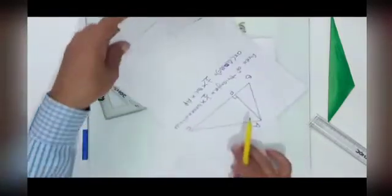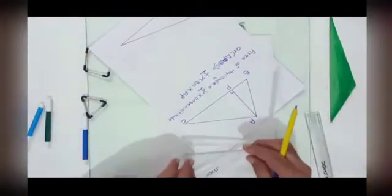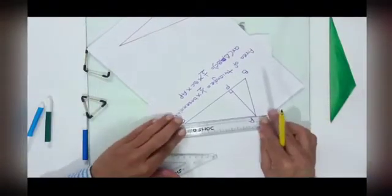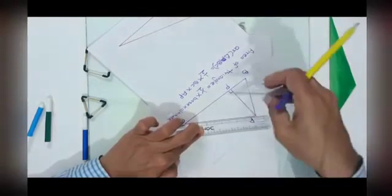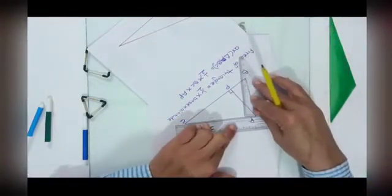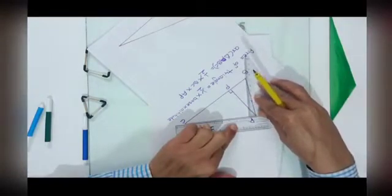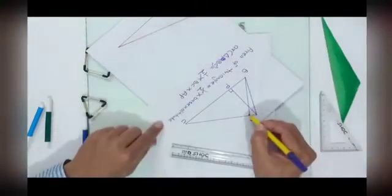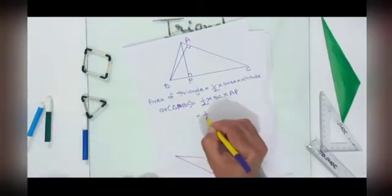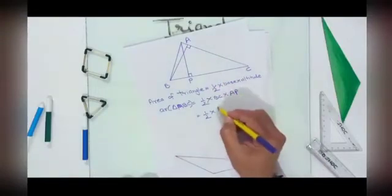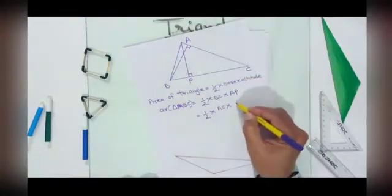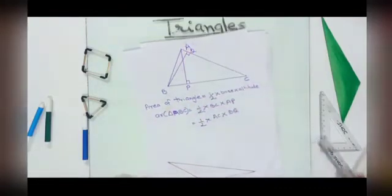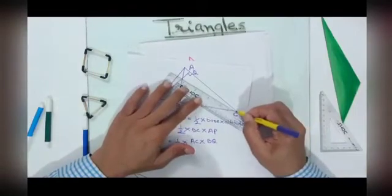Suppose if I consider AC as the base, in that case the perpendicular is drawn from B. Again I keep the scale coinciding with side AC and keep the set square along it to get the perpendicular on side AC. So the area of the triangle can again be written as half into AC into BQ, where BQ is the perpendicular from B to AC.